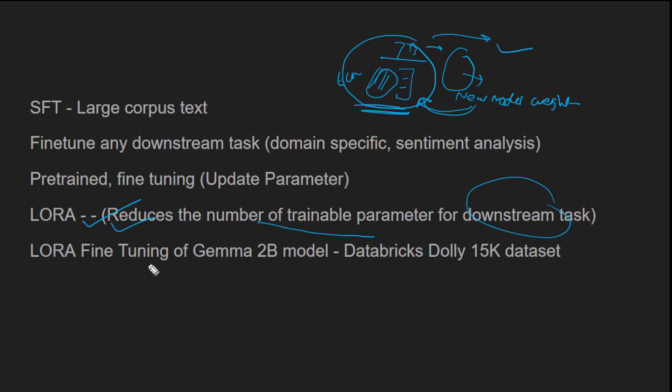For today's demo, we are going to do LoRA fine-tuning of the Gemma 2B model on the Databricks Dolly 15K dataset. This is our today's task — we'll see how it performs. I am using the Gemma notebook that Google has provided, and we are going to use the same notebook for this demo.